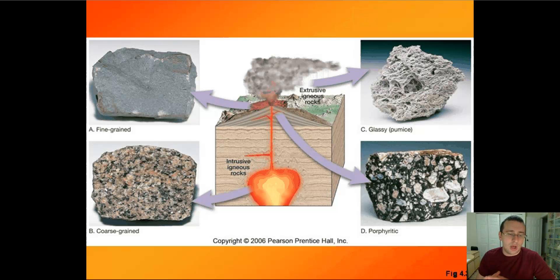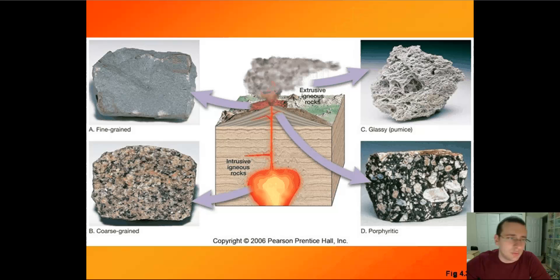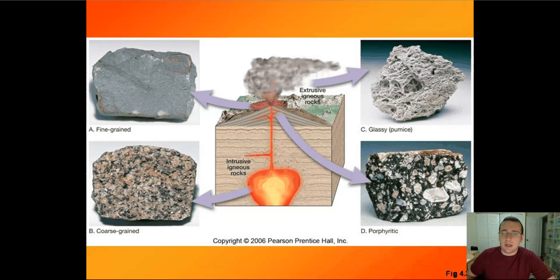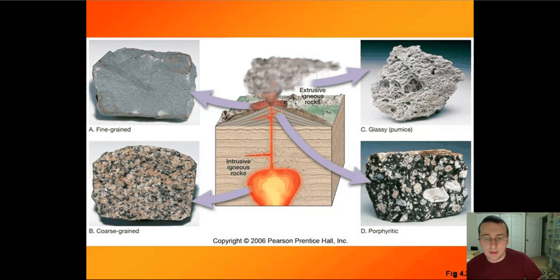When the rock is somewhere in between, you're going to have some fine-grained and some coarse-grained material in the same rock — those are called porphyritic rocks, as you can see on the right side. Rocks formed from explosive eruptions are more glassy in nature and sometimes have vesicles of gas trapped inside, leaving holes — as you see in pumice rock. We call those glassy or vesicular rocks.